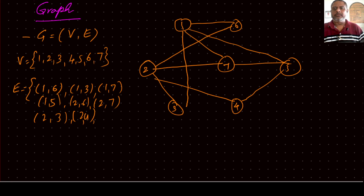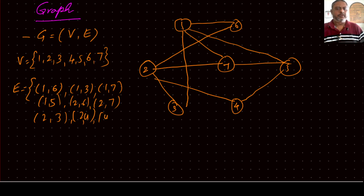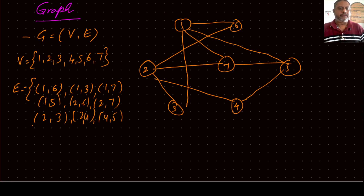Looking from node 3: connections to 2 and 1 are already added. From node 4: 4 to 2 and 4 to 5. From node 5: 5 to 1 and 5 to 4 is already there, so only 5 to 7 remains.